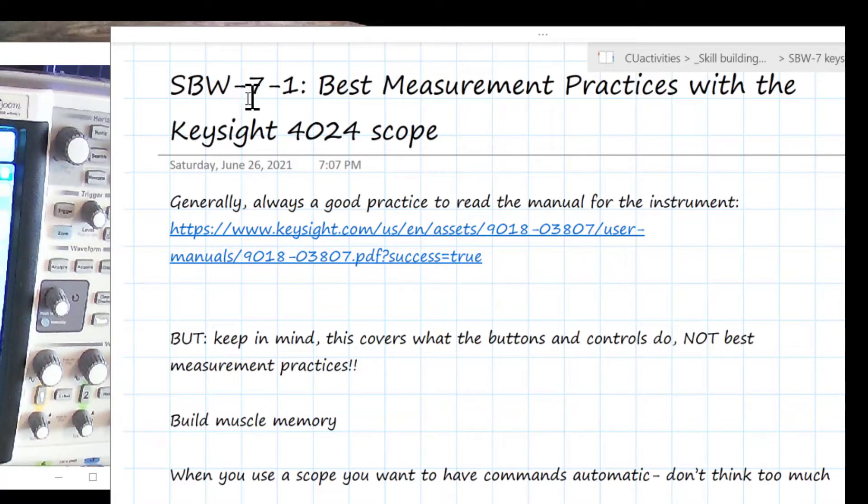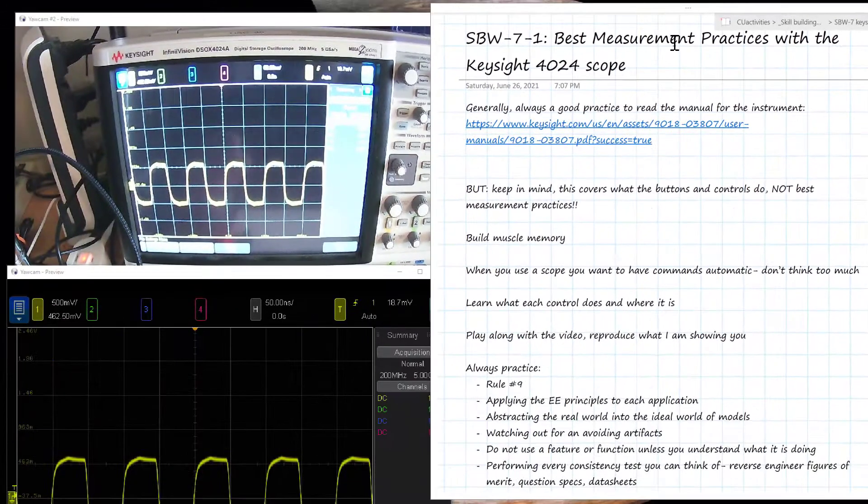This is Skill Building Workshop Series 7, and this is the first in the series. It's about best measurement practices with the Keysight 4024 scope, and that's the scope that we've got over here.